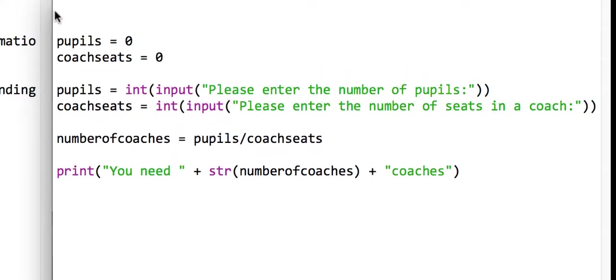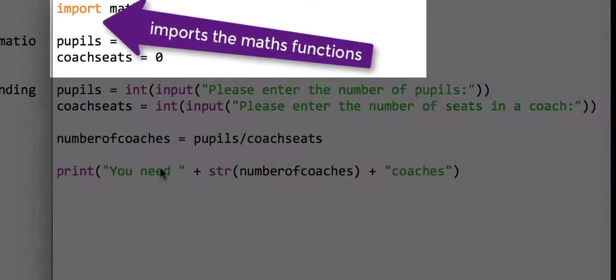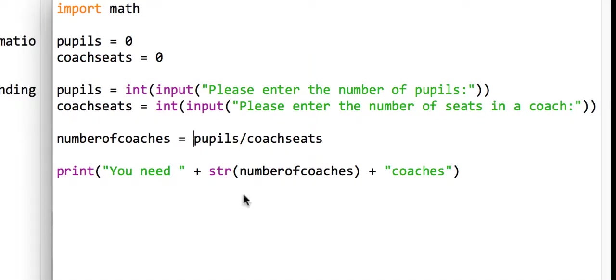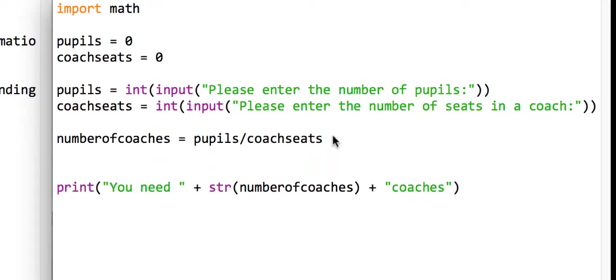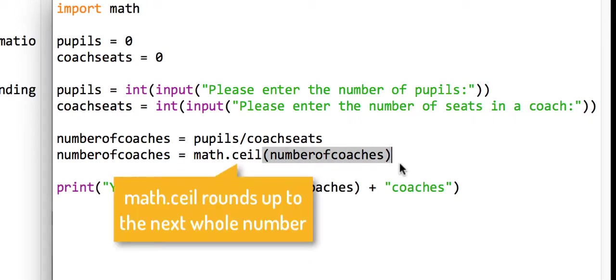We're going to import the math library, and just like before, we'll put it on a separate line to make it more readable. The number of coaches is whatever it was before, but using math.ceil. This function, math.ceil, stands for ceiling, which is up, which means it's going to round it up.